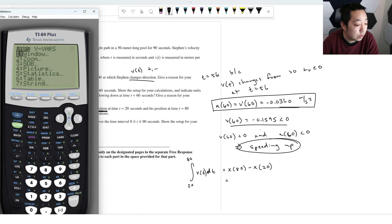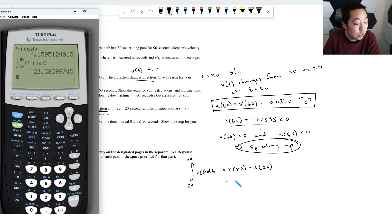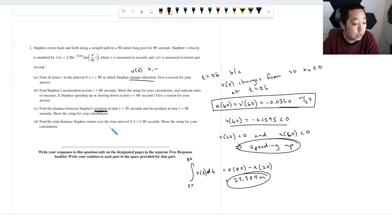We want to go from 20 to 80. So 20, then 80, then put in vars, y vars, function, y1, and then we're just integrating the velocity there. So we get 23.384 meters. Don't forget the units. Always got to put the units in there. Show the setup for your calculations. That's our setup.